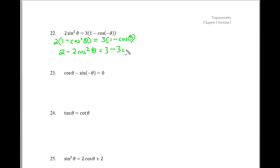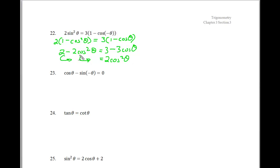Now we're going to move everything to one side of the equal sign, because we have cosine squared theta and cosine theta, which means we'll need to factor. Adding 2 cosine squared theta to both sides, we get 2 cosine squared theta. Moving the 3 cosine theta and then subtracting 2 gives us plus 1 over here, leaving us with a factorable problem — so I'll do some substitution.